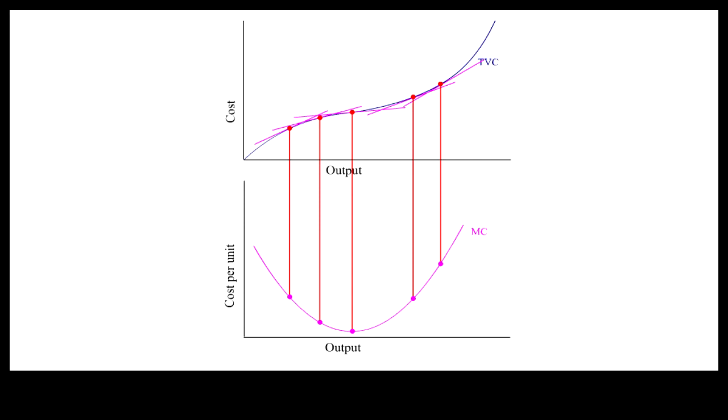Given the inverted S shape of TVC, MC first decreases until MC reaches its minimum at the inflection point. Then MC increases after the inflection point. Thus, the inverted S shape TVC generates a U-shape MC.